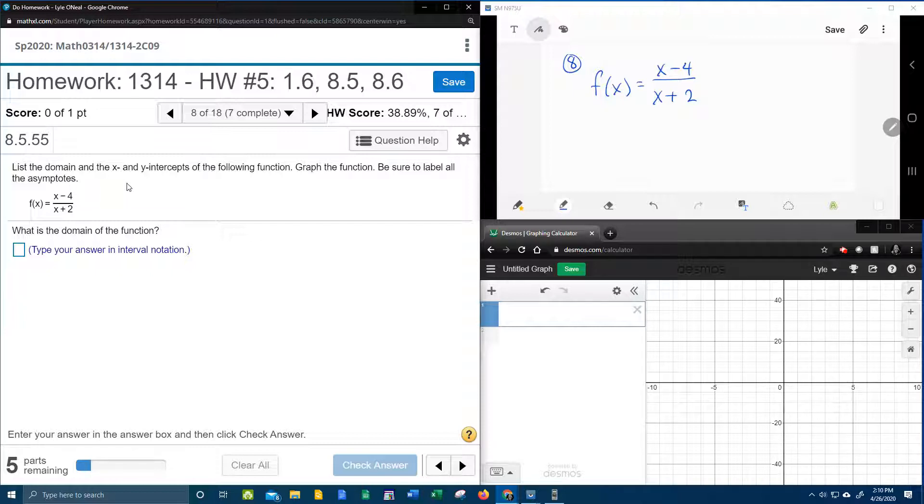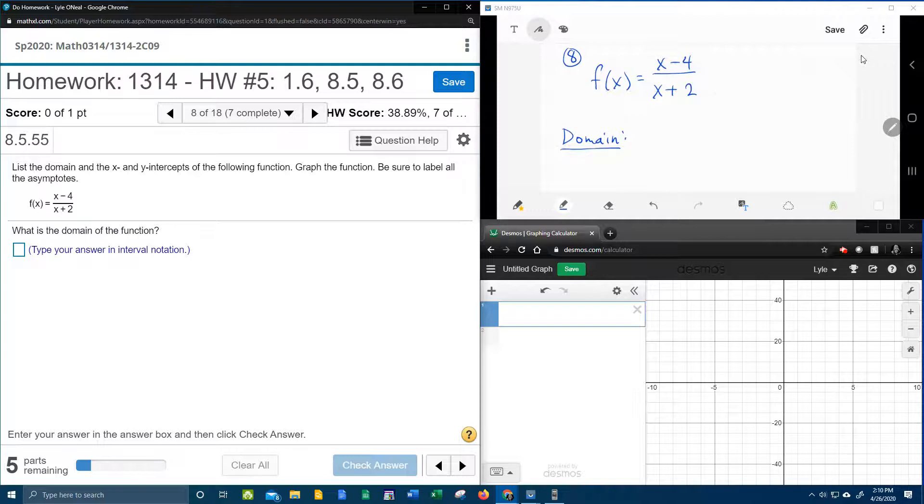So we're going to find a bunch of stuff. Up here in our window in the right hand corner, let's get started. The first thing that they want to know is what is the domain. So in order to find the domain, first you're going to have to find the restriction, and for a rational function we know that the denominator cannot be 0. That is the restriction.